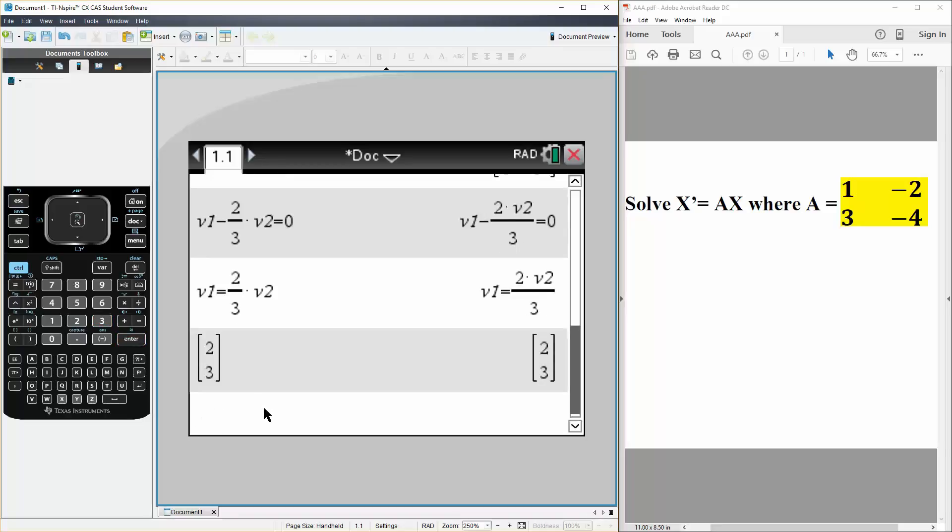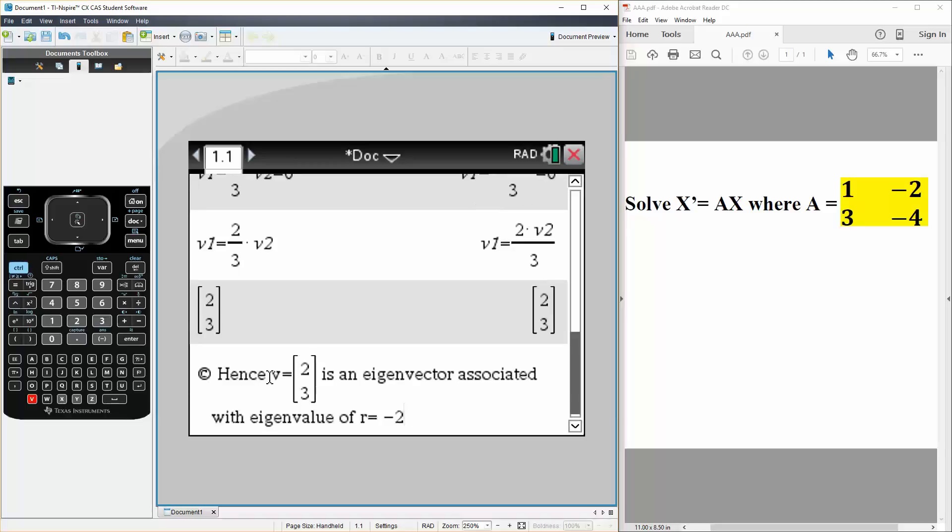And therefore we can say for this one eigenvector, hence V is equal to [2, 3] is an eigenvector associated with the eigenvalue of R is equal to negative 2.